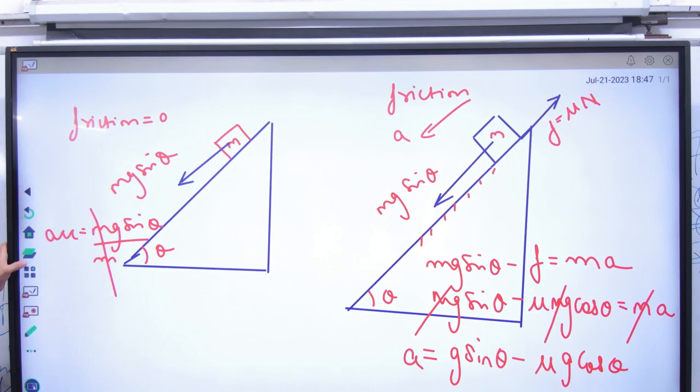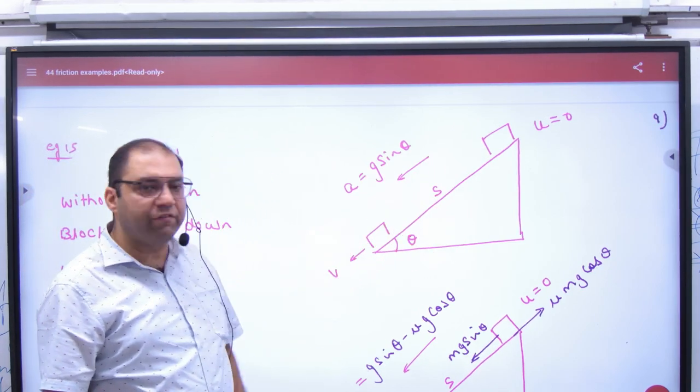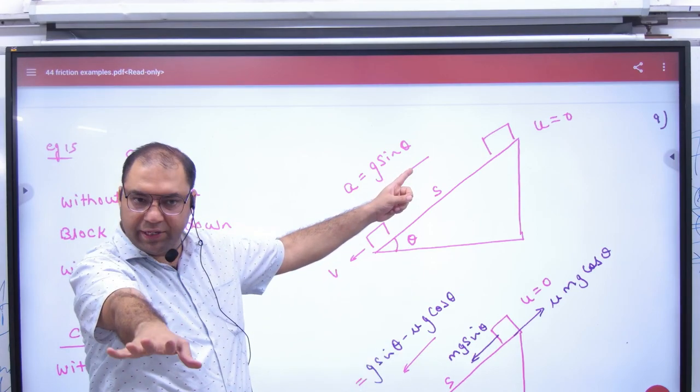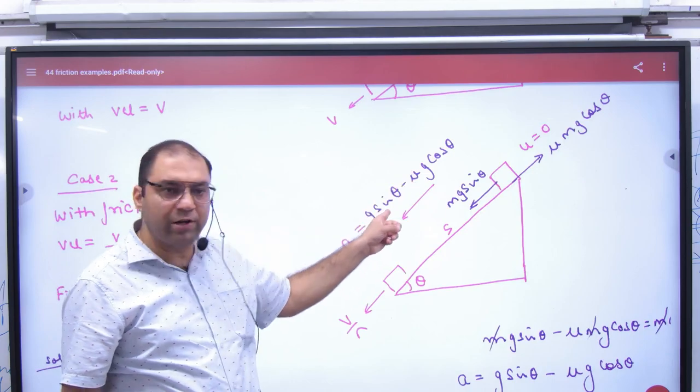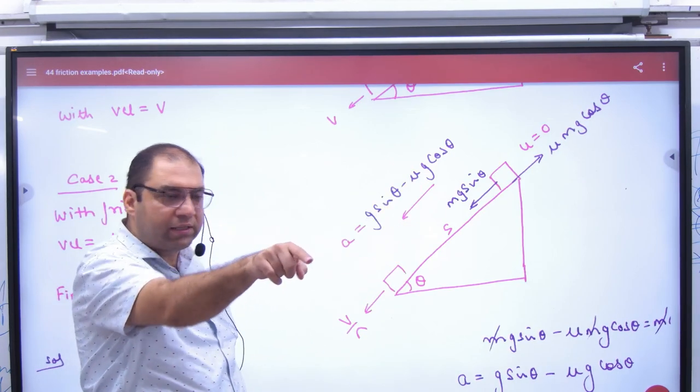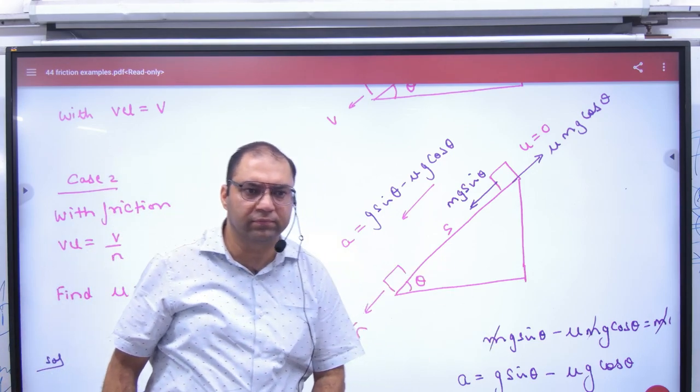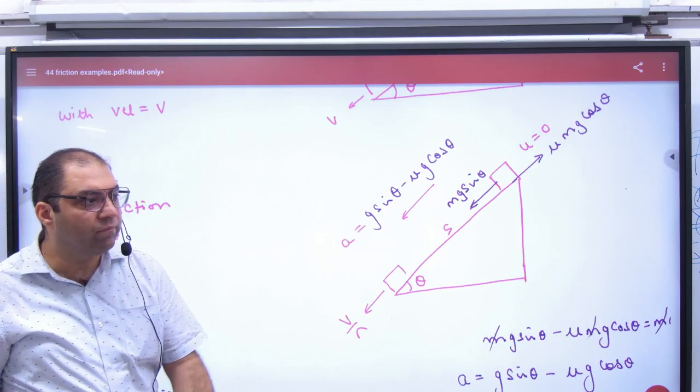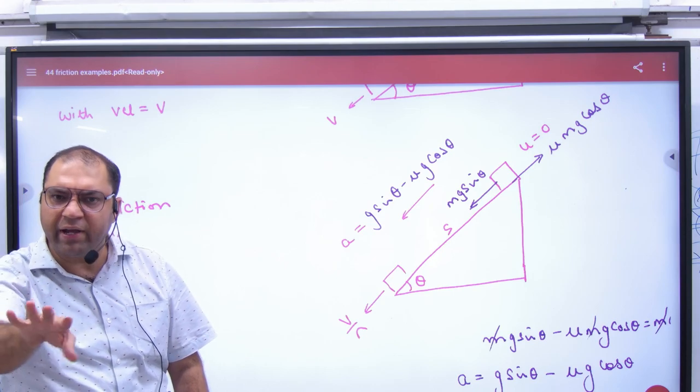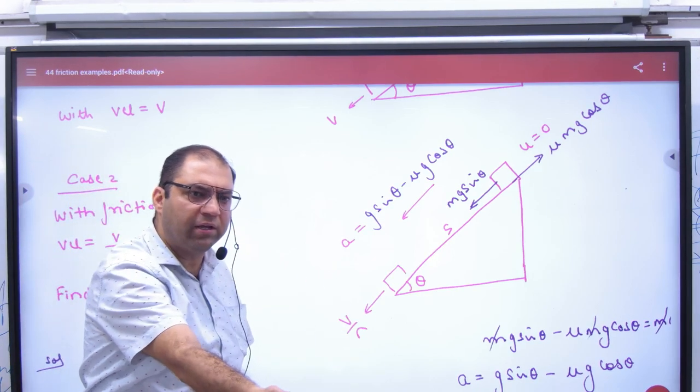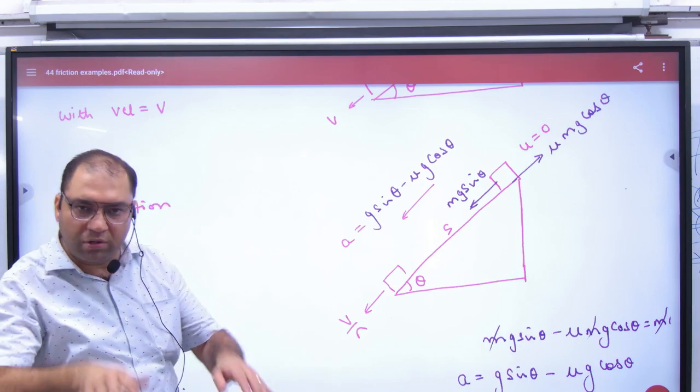Now question will ask you that in case number one, smooth surface hai. A body starts from u equals zero, comes down with velocity v. Acceleration in smooth is G sine theta. And distance s. In second case, friction is present. So acceleration kya hogi? Just calculated G sin theta minus mu g cos theta. Body comes down with velocity v by n. So you tell what will mu be. And this mu will be static or kinetic? Kinetic. Moving so kinetic. Static doesn't arise. That's why he's not giving mu k. He will just give mu. Body is moving, so it's kinetic. That's why in half the questions mu k is not given. Only mu is given. You know it's kinetic because most questions are about movement.